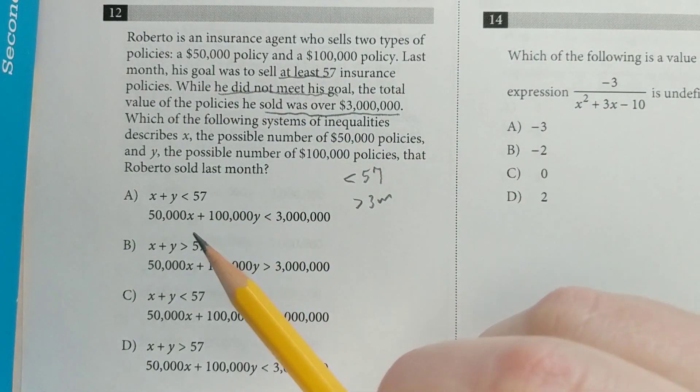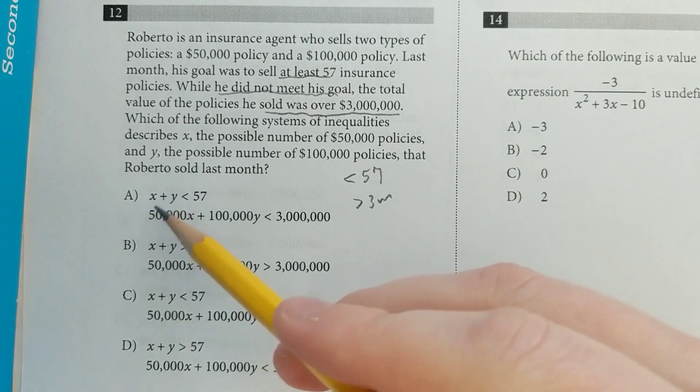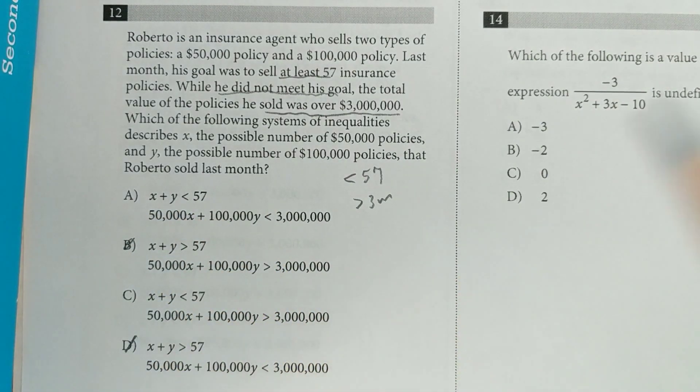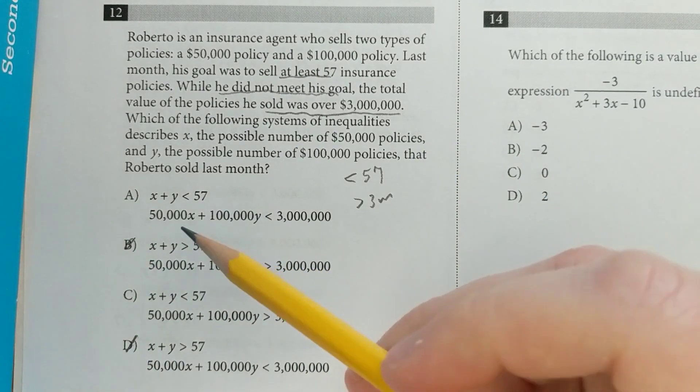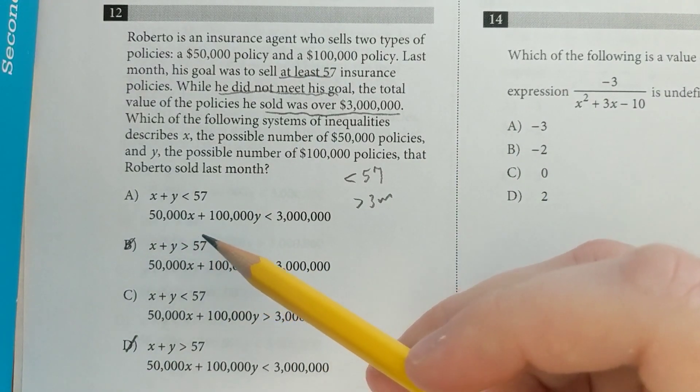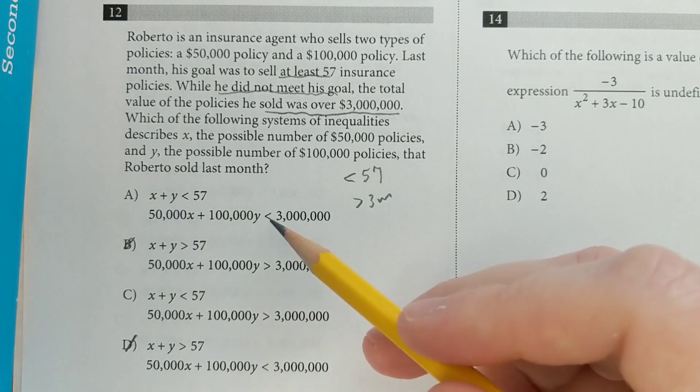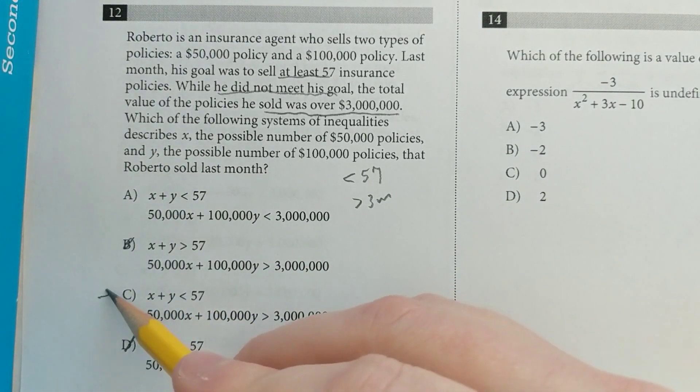So X plus Y has to be less than 57. That works for this one, doesn't work for that one, works for this one, doesn't work for that one. And then 50,000X plus 100,000Y has to be greater than 3 million. This is less than, this is greater than, so let's see.